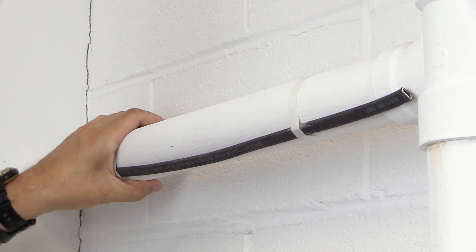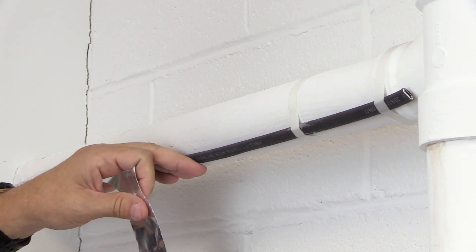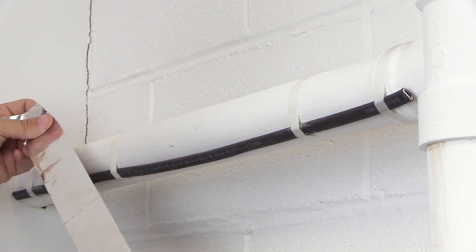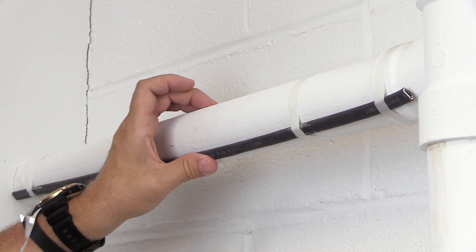Now that we have the cable attached to the pipe, we're going to use this aluminum tape. This aluminum tape does two things: it helps hold the cable closer to the pipe and it helps spread the heat out.